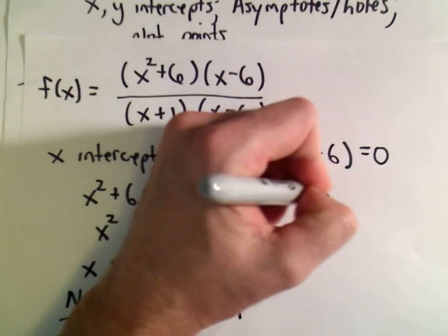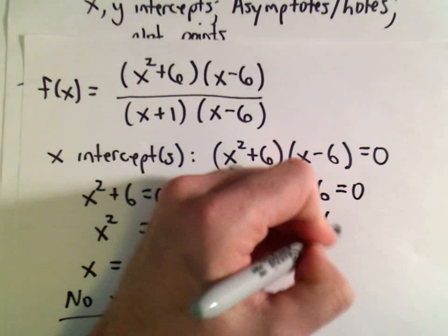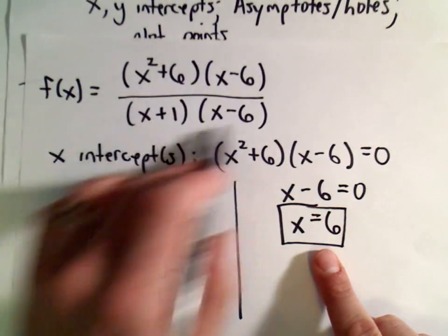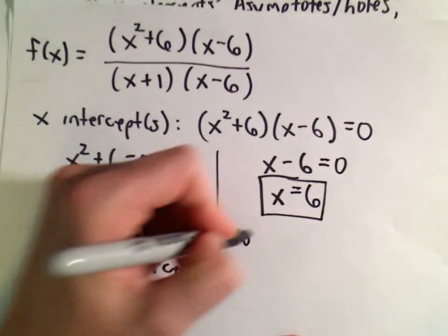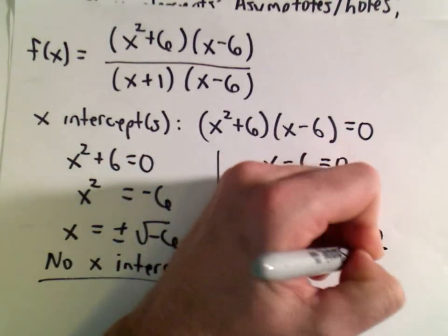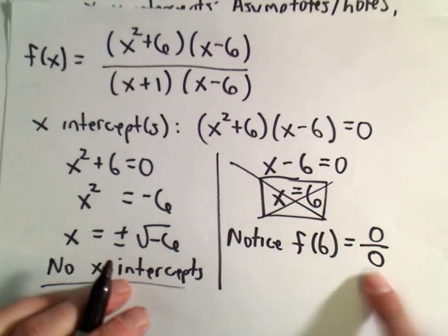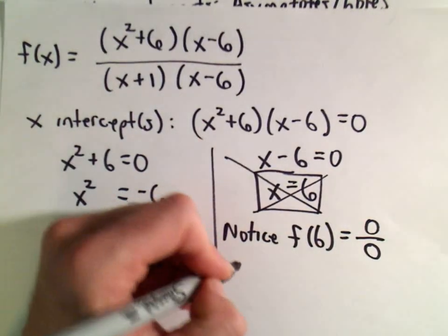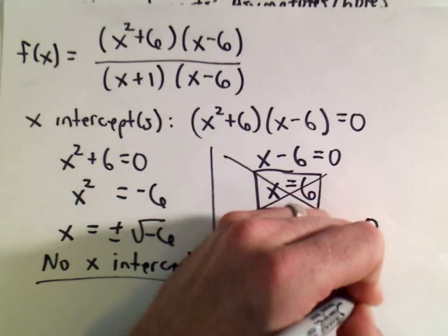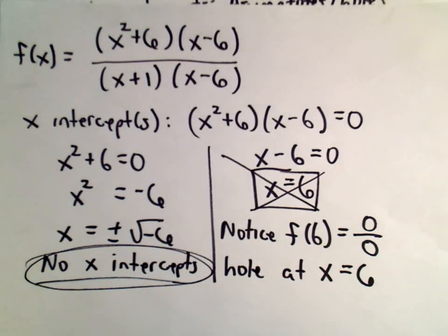Looking at x minus 6 set equal to zero gives x equals 6. We might be tempted to call that an x-intercept, but if we plug 6 into our function, we actually get 0 over 0, which is undefined. For a rational function, when we get 0 over 0, that tells us there's actually going to be a hole at the x-coordinate of 6. So there are no x-intercepts at all for this function.